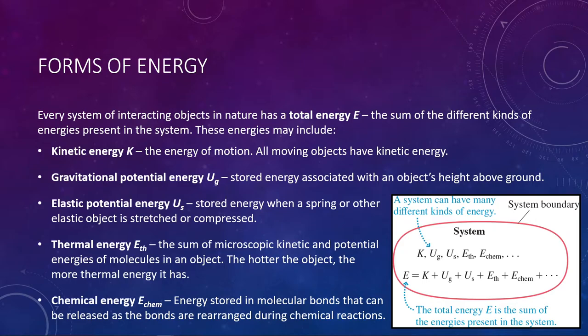Total energy could be the sum of all of these different energies together. Your total energy E is the sum of all individual types: kinetic, gravitational potential, elastic potential, thermal, and chemical. That being said, not every system deals with changes in all of these different types of energy, so it's usually not as complex as it can potentially seem.